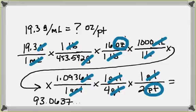If we plug it into our calculator, we're going to get 93.0637. We want only three significant digits because we started off with 19.3, so that's going to change our answer to 93.1. And we put the unit ounces per quart.